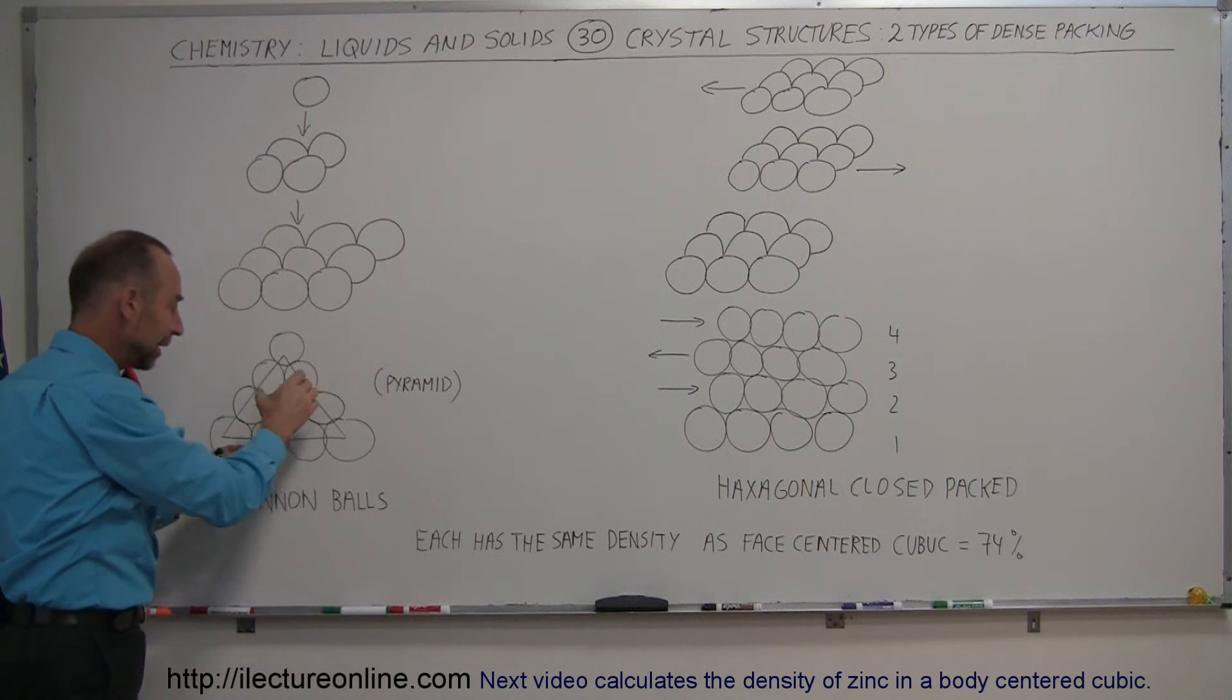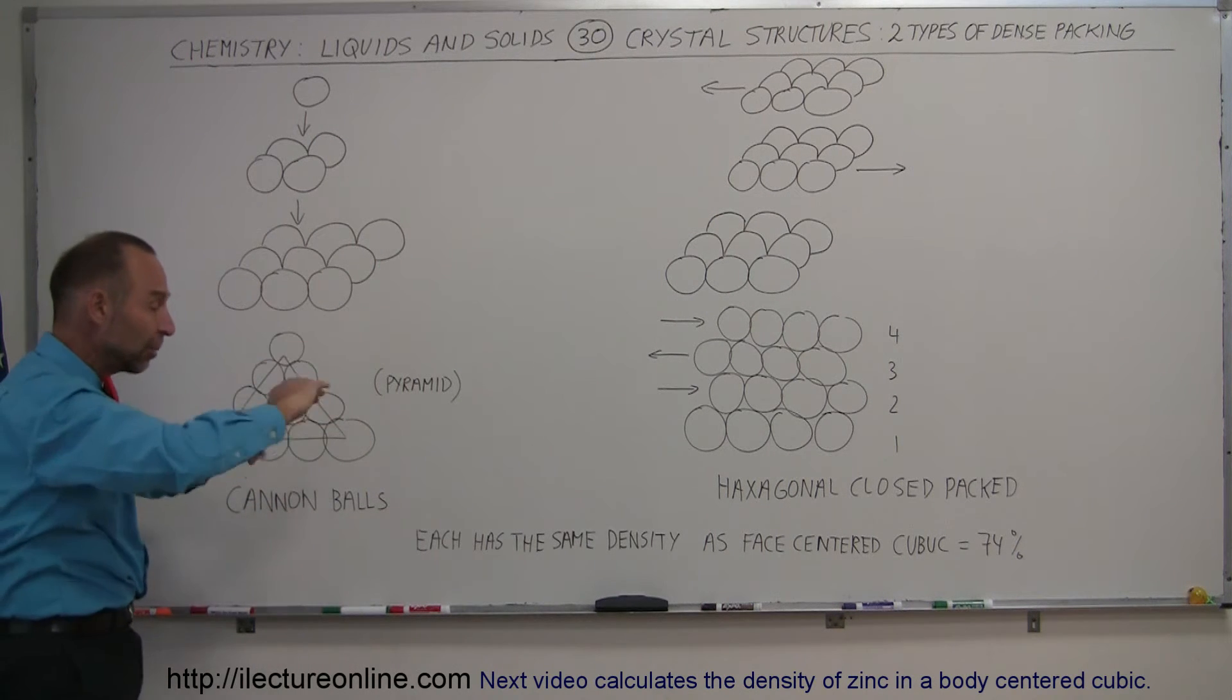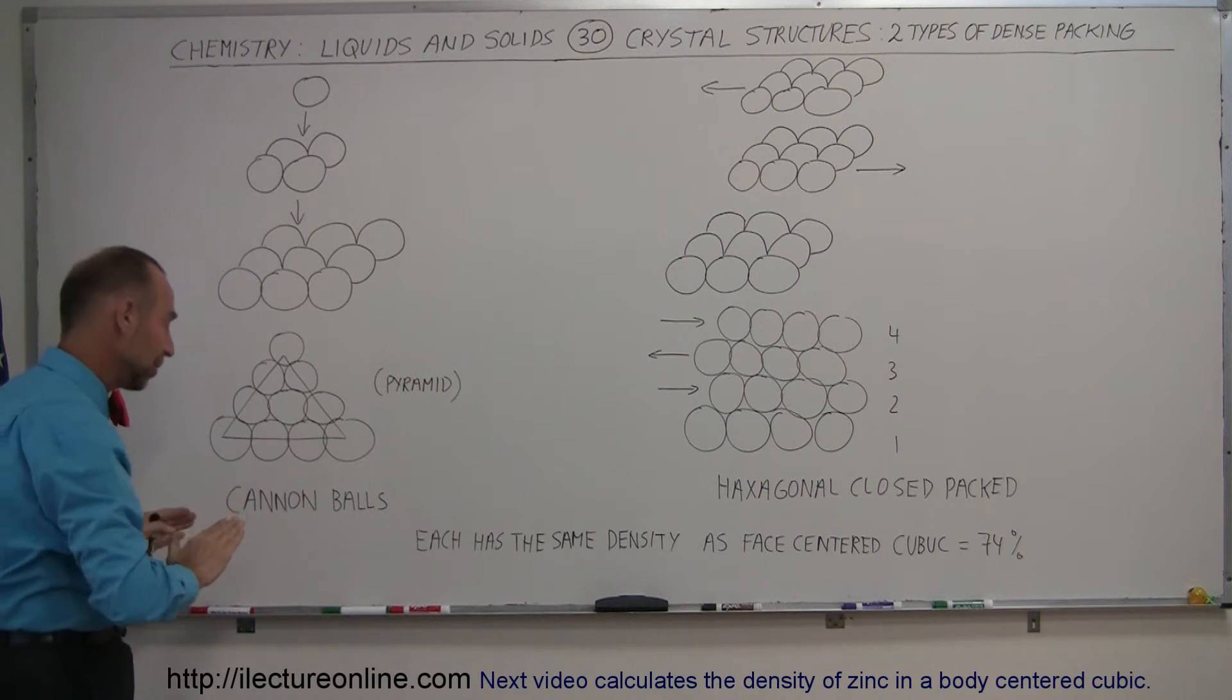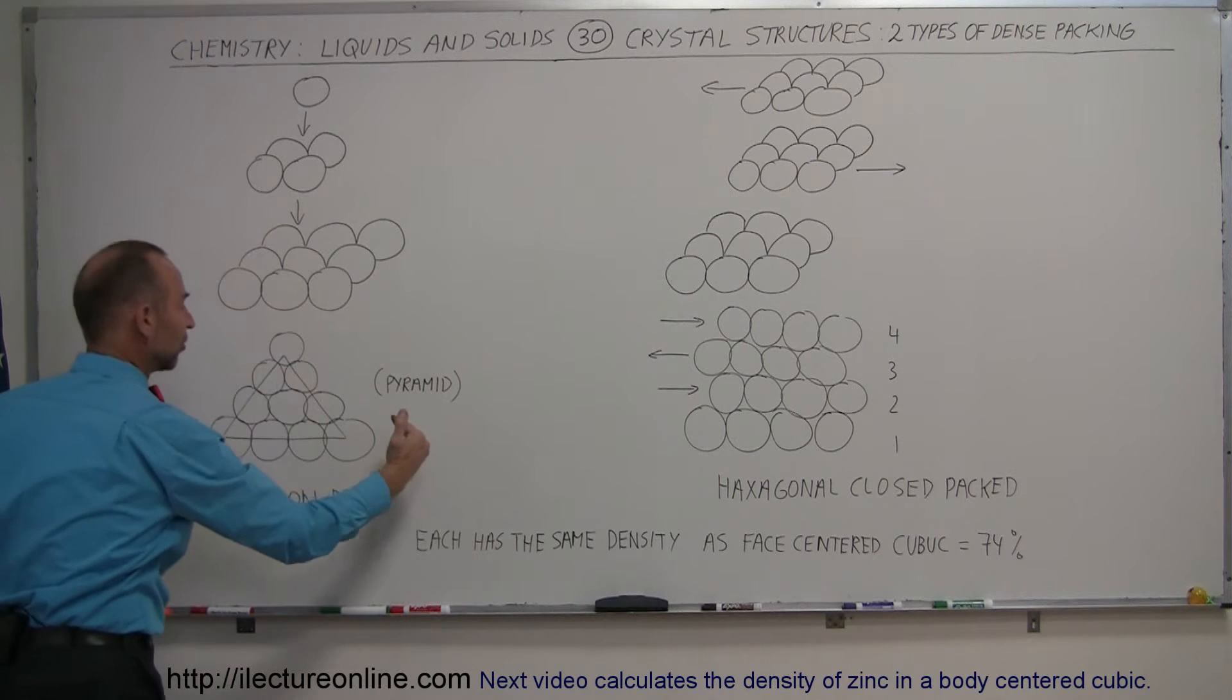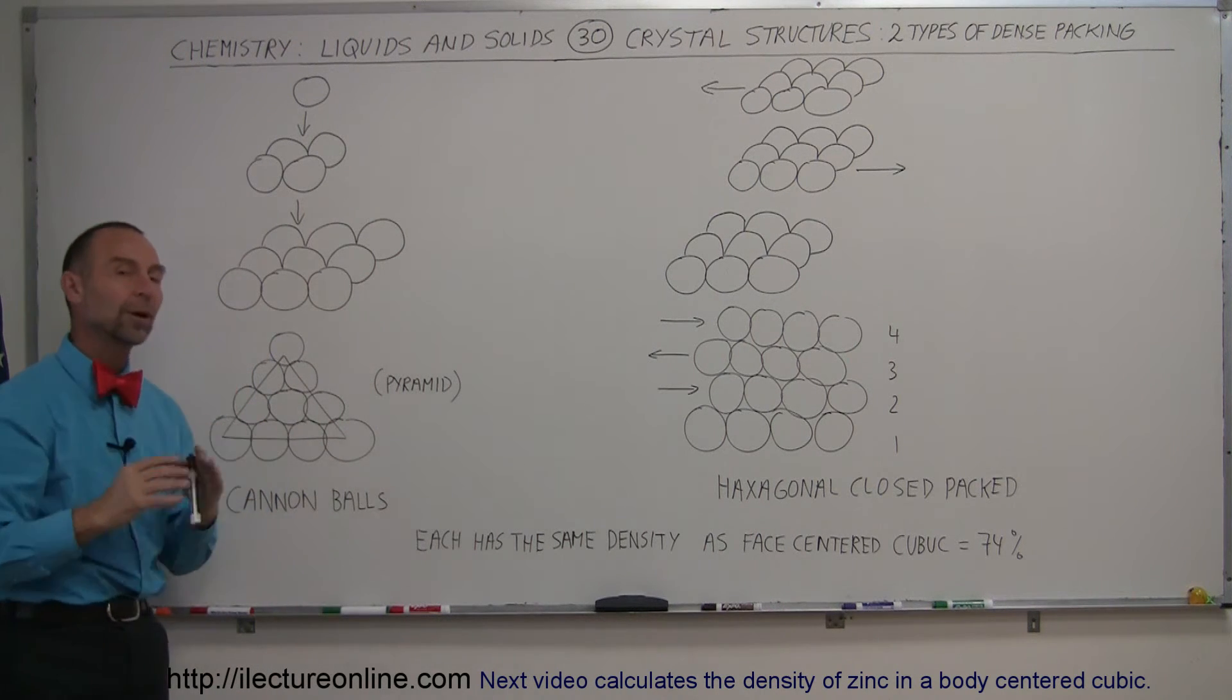So we have this bottom layer, then you put the second layer where the depressions are, where indentations are between the atoms of the first layer, and so forth, and get yourself a nice little pyramid. The pyramid slopes away from you in this direction, slopes away this way, slopes back forward, so we have a nice little square pyramid shape.